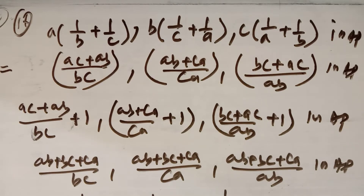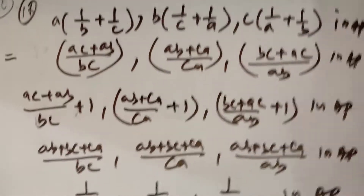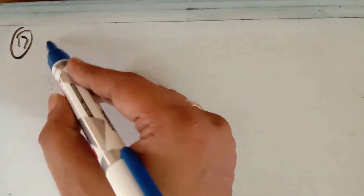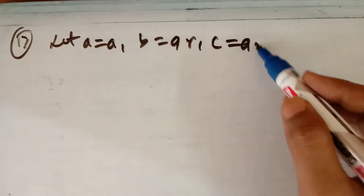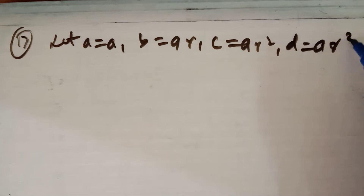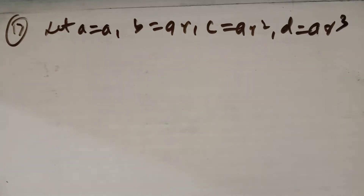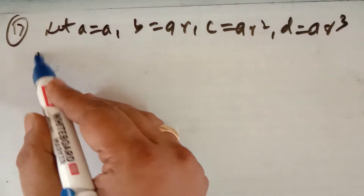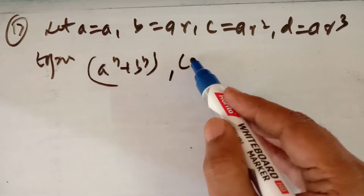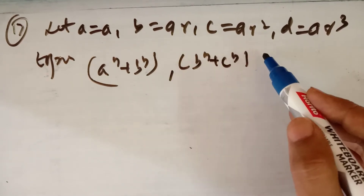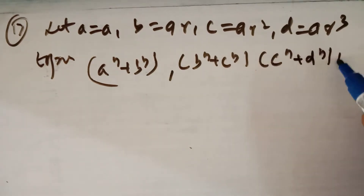In question 17, a, b, c, d are given in GP and you have to prove that two expressions are in GP. Because a, b, c, d are in GP, let a = a, b = ar, c = ar², d = ar³. You have to prove that (aⁿ + bⁿ), (bⁿ + cⁿ), (cⁿ + dⁿ) are in GP.